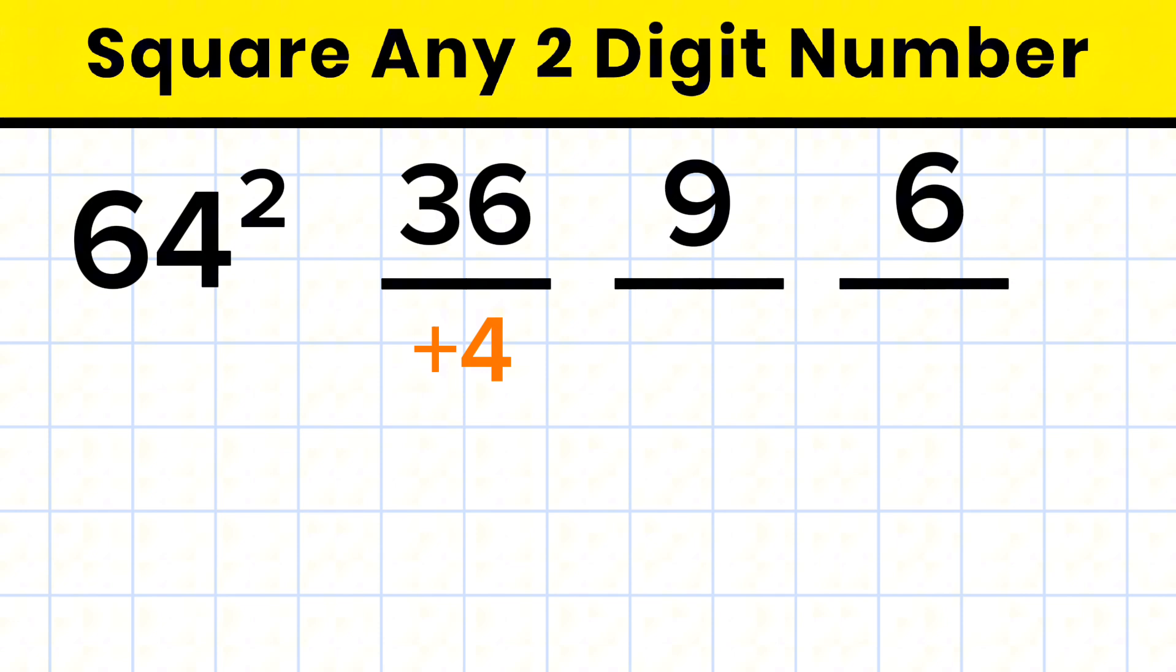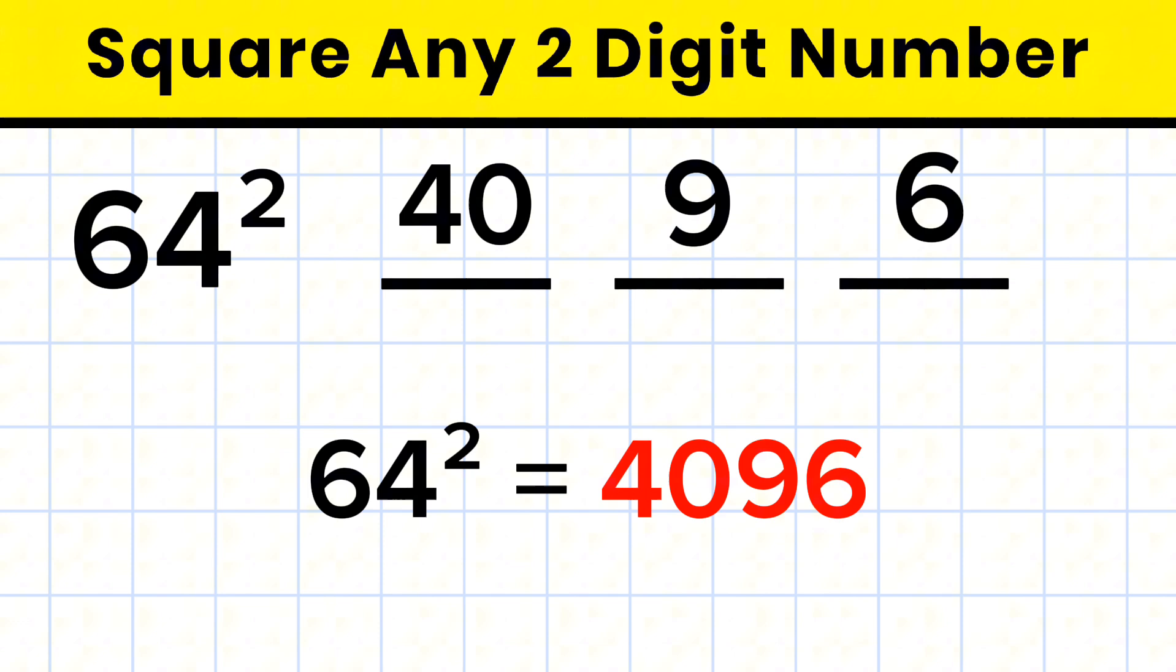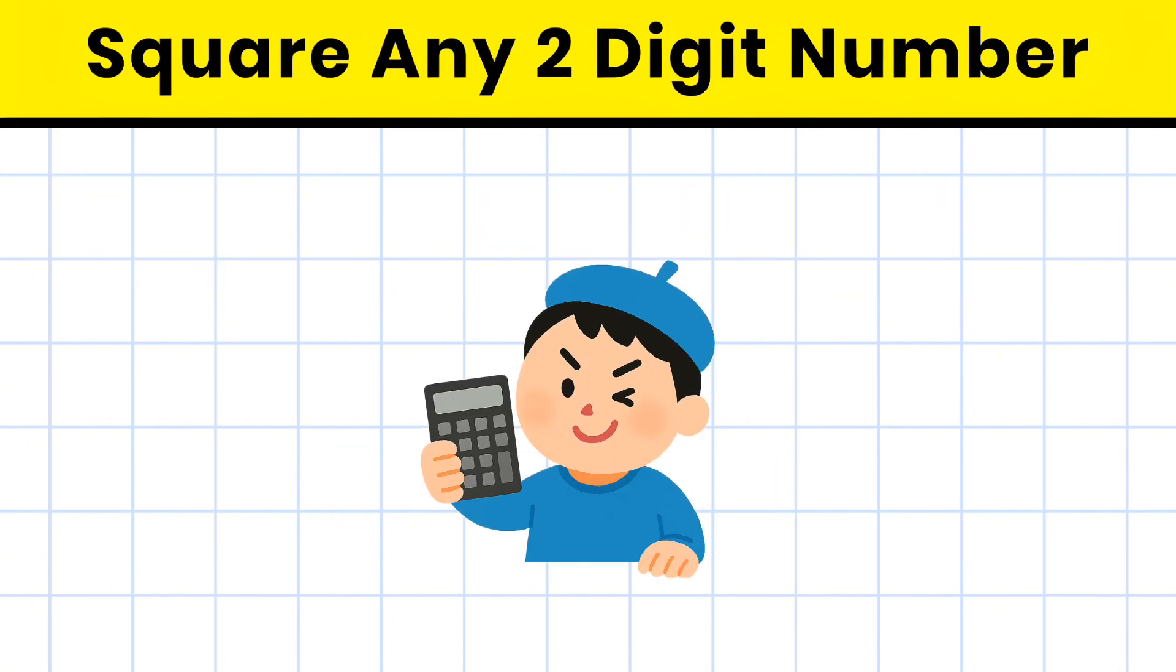So write 9 in the middle and carry 4. Now we'll add the first box. That is 36 plus 4 gives us 40. So the final answer is 4096. That was even faster than a calculator.